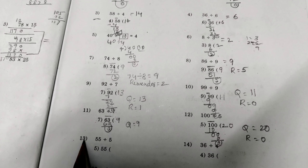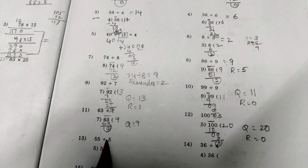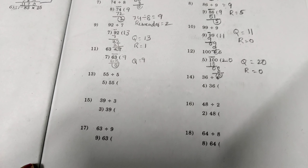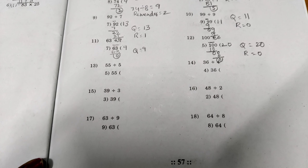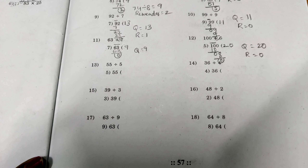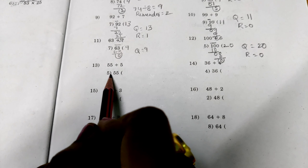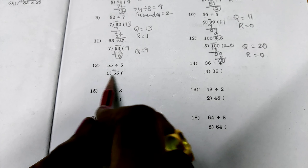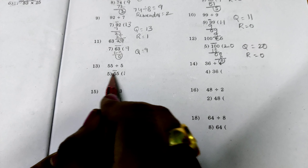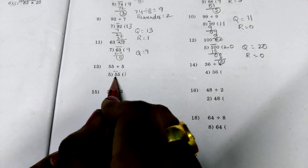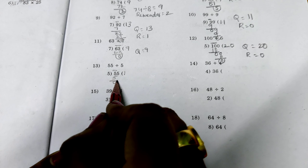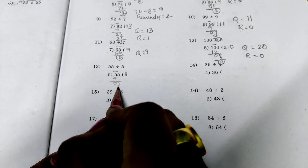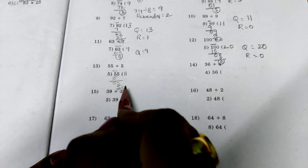Next problem: we are taking only 1 digit — 5. How many times can we subtract 5 from 5? Only 1 time. So 5 ones are 5. 5 minus 5 is 0. Get down 5 again. How many times can we subtract 5 from 5? Only 1 time. So 55 divided by 5 is equal to 11.